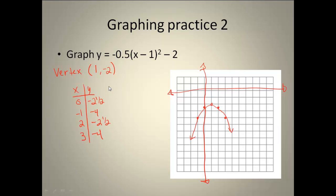Hopefully, you got your vertex to be at 1 negative 2. And your table of values. I picked 0, negative 1, 2, and 3. And got these corresponding y values. If you pick different x values, you're going to have different y values than what I got. Plotted my points and sketched in my graph. Notice it opens downward, which matches what I have up here because my a is negative.